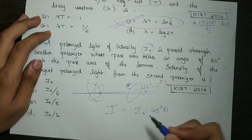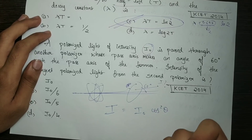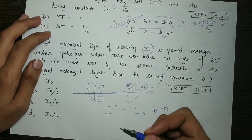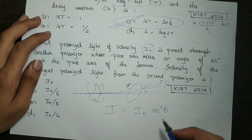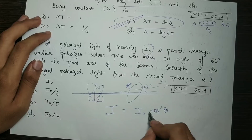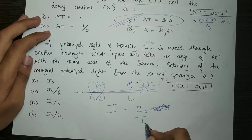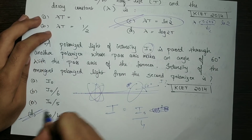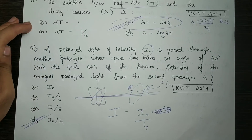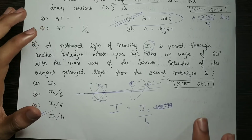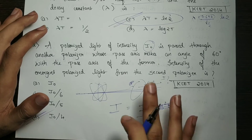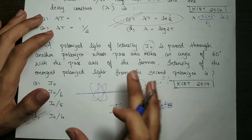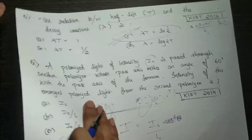The direct formula is I equals I0 into cos squared theta. Theta is equal to 60 degrees, so cos theta is 1/2. Cos squared theta is equal to 1/4. So the answer is I0 by 4 — option D is correct. Simple formulas. I need to explain these formulas in the book.